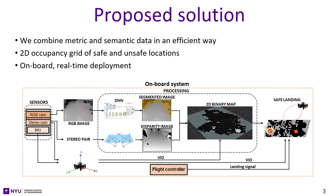Our approach efficiently combines both metric and semantic information. From the visual information, we define several cost metrics based on critical geometric attributes in order to assess potential valuable landing areas. Based on this information, we update a 2D binary map of the safe and unsafe landing zones.